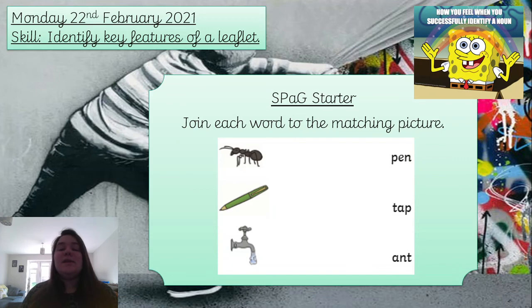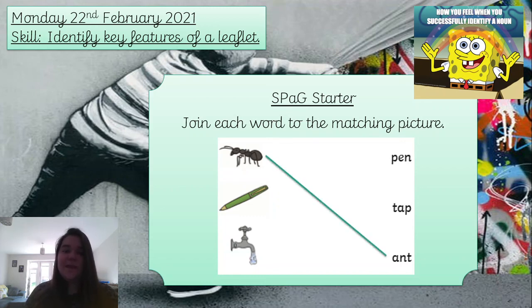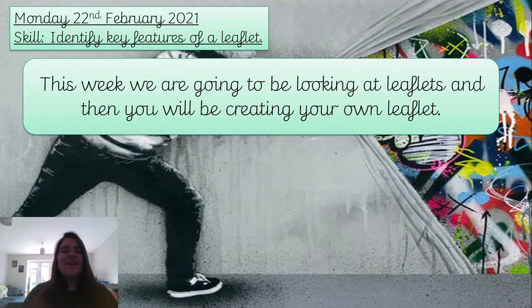For our SPAG call zone activity, we need to match up the word to the matching picture. So 'ant' goes down there, 'pen' goes to the top one, and 'tap' goes to the middle one.